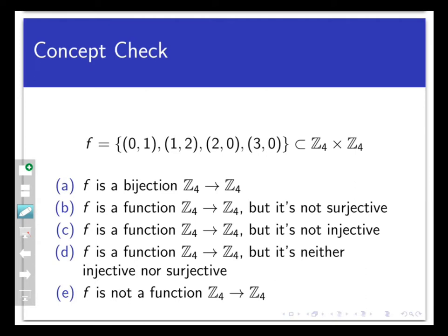Let's put this idea to work right away with two quick concept checks. First, let's look at the subset F of Z4 cross Z4 given by the following set of ordered pairs. Then what can we say about F? Pause the video and come back when you have your choice made.